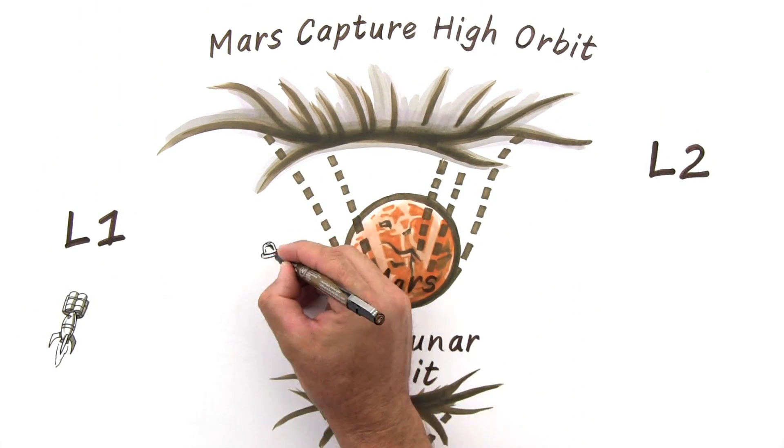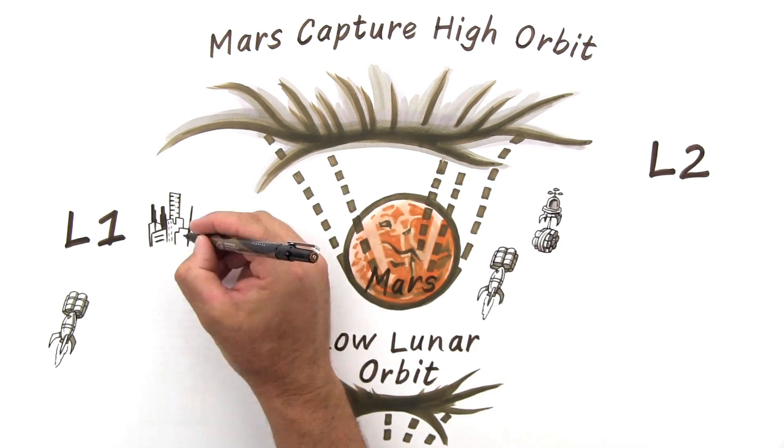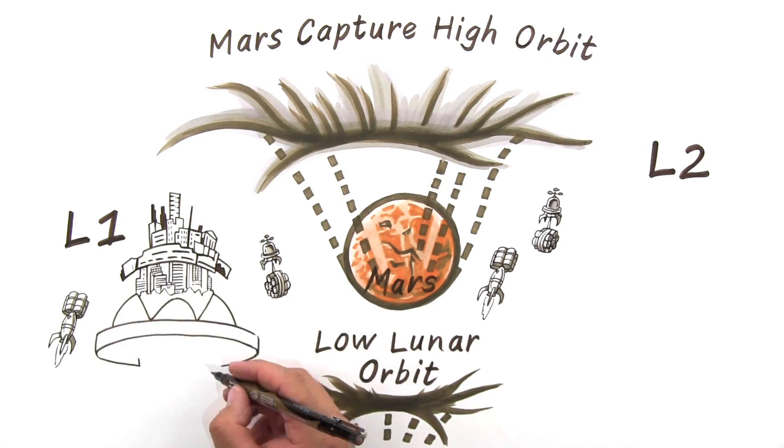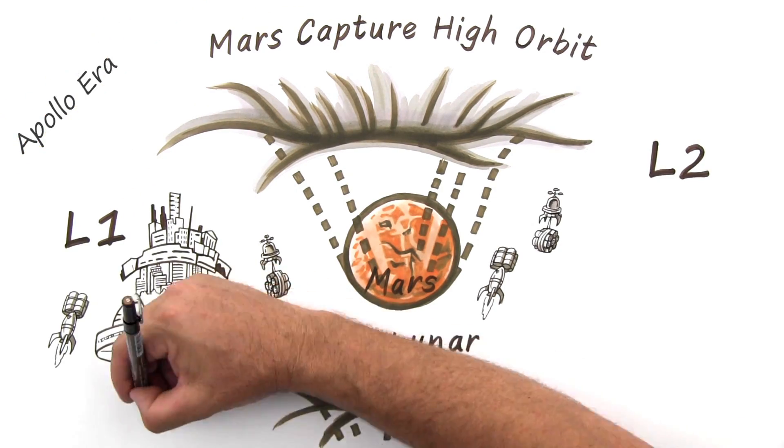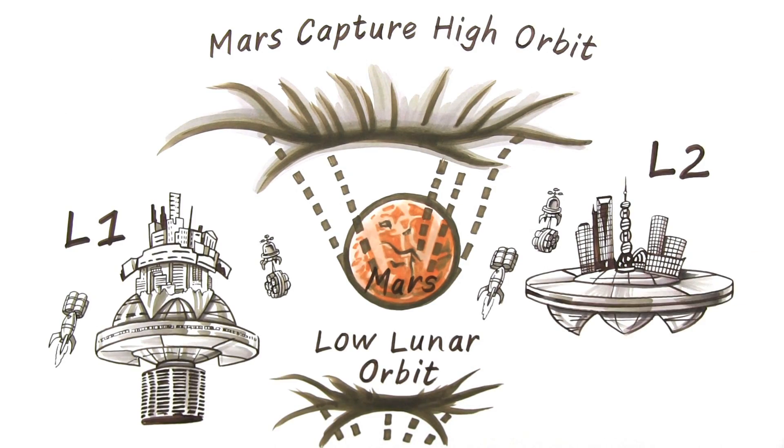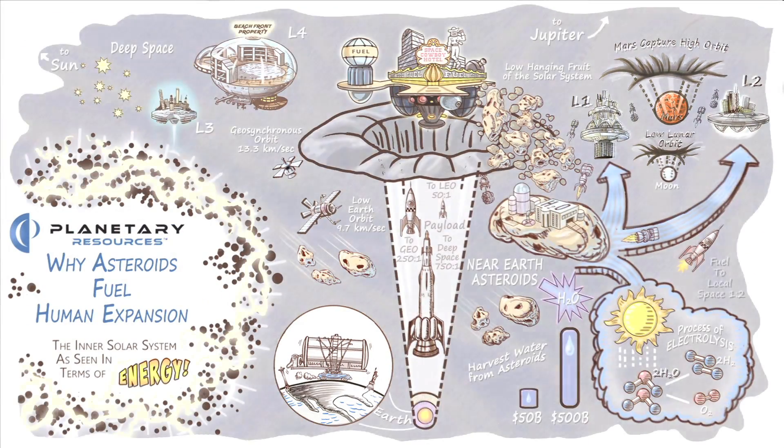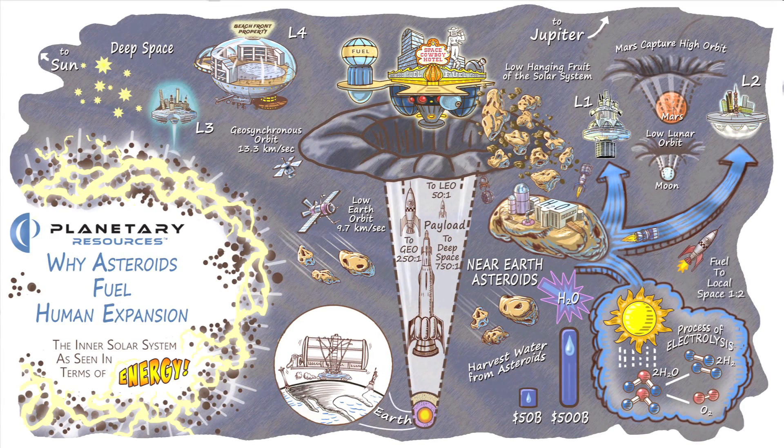Mining asteroids could provide a fuel source 1,000 times more efficient than the brute-force, bring-everything-with-you approach used by the Apollo moon program. So how big is the space market when economics improve by 1,000 times? No one knows for sure. But neither did the Wright brothers at Kitty Hawk, nor IBM or Bill Gates at the dawn of their new markets.